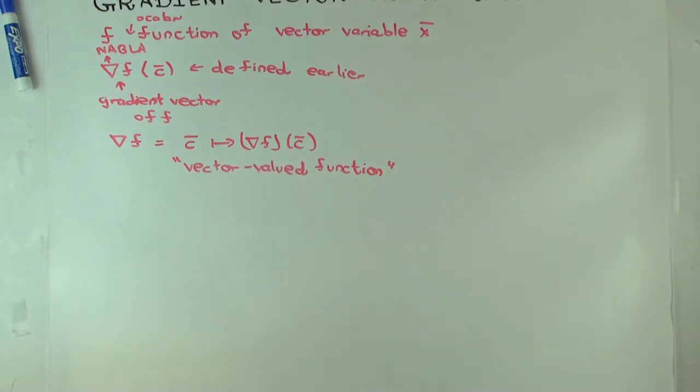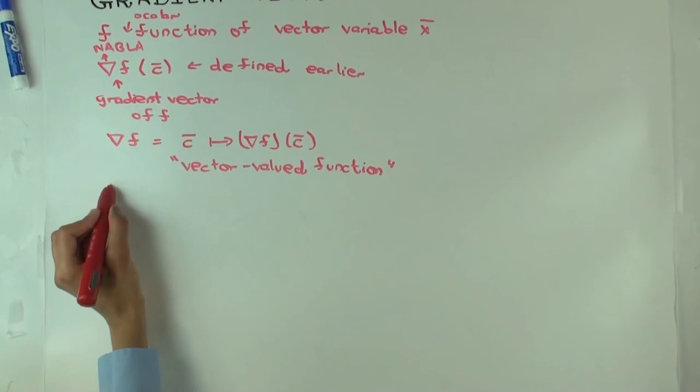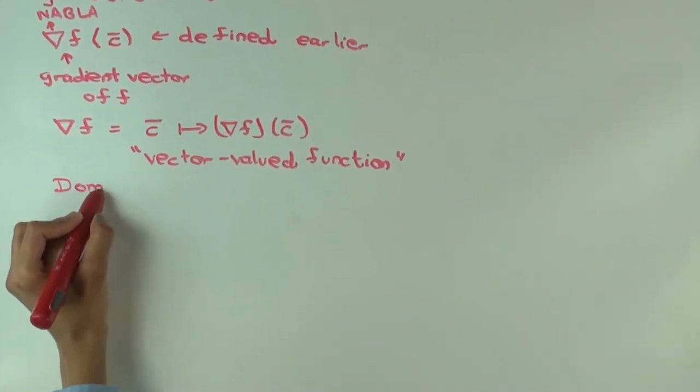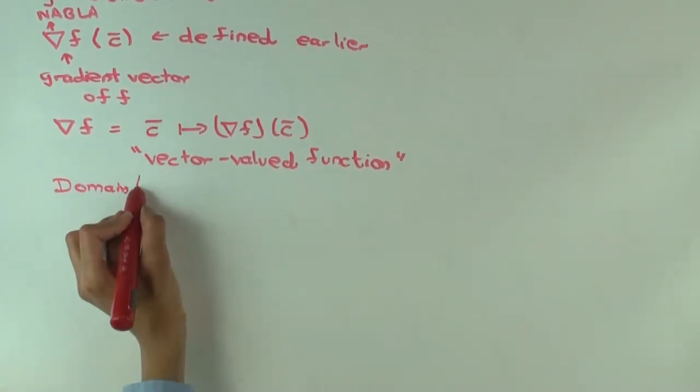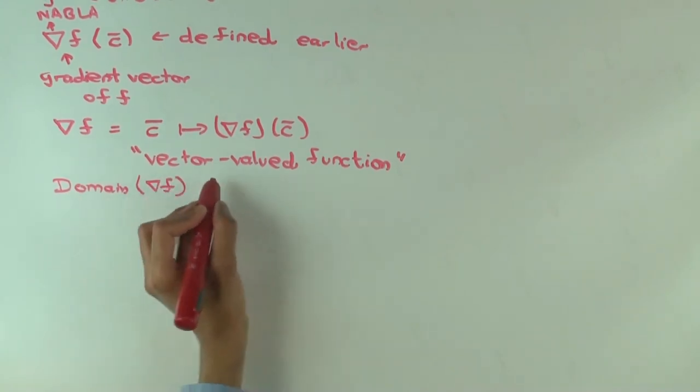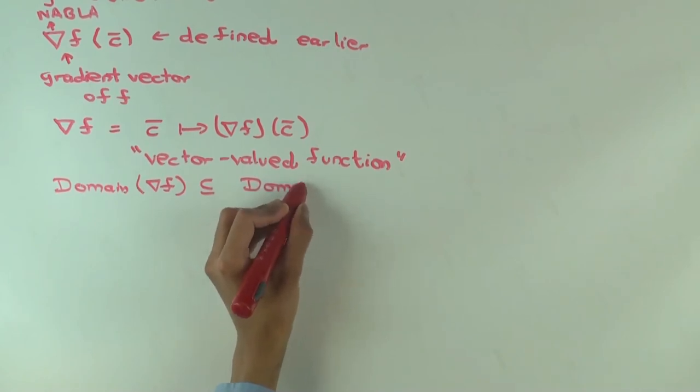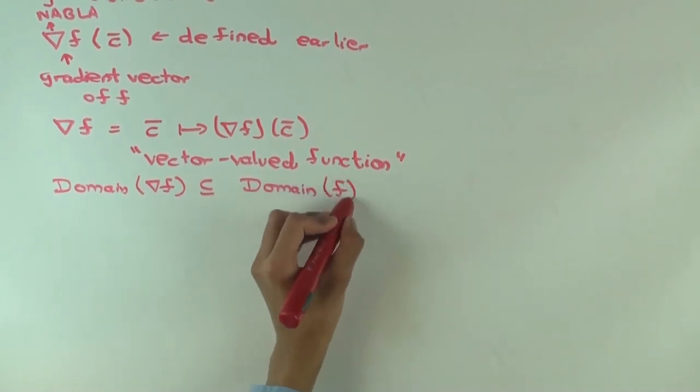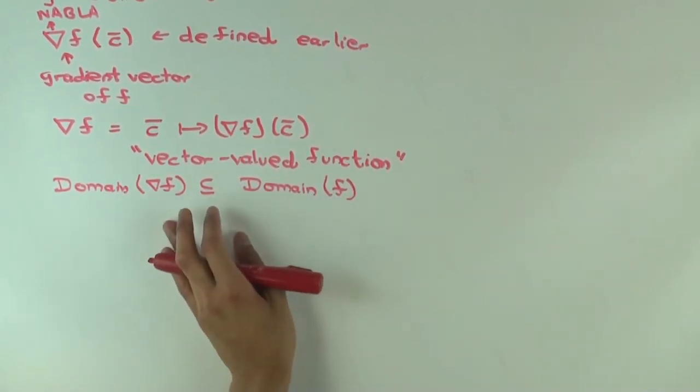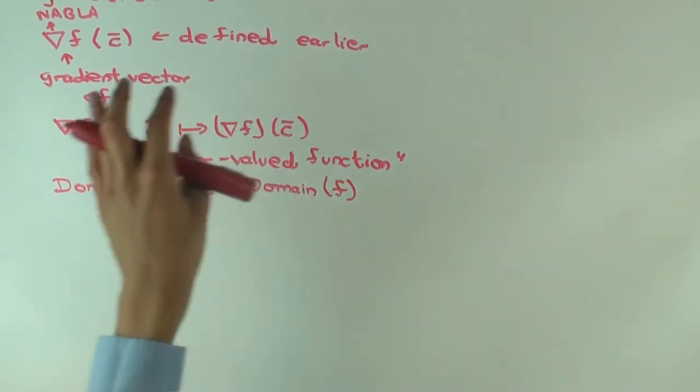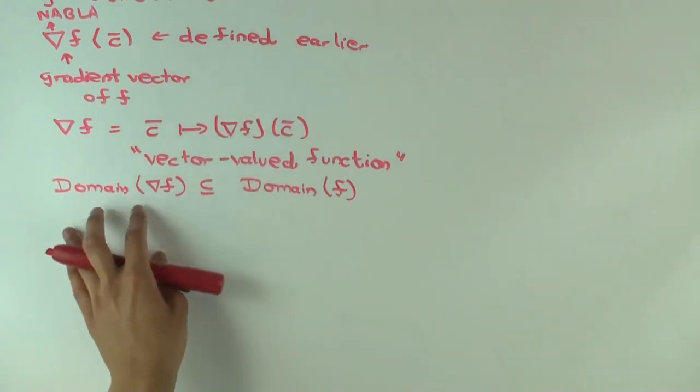And I should say this, that the domain of this new function is contained in the domain of f. In fact, it will be contained in those points in the domain of f for which the function is defined around the point. Because in order to take the gradient vector, you need the function to be defined in a ball around the point.